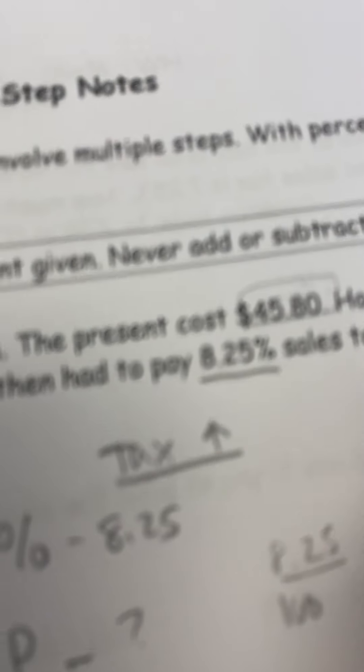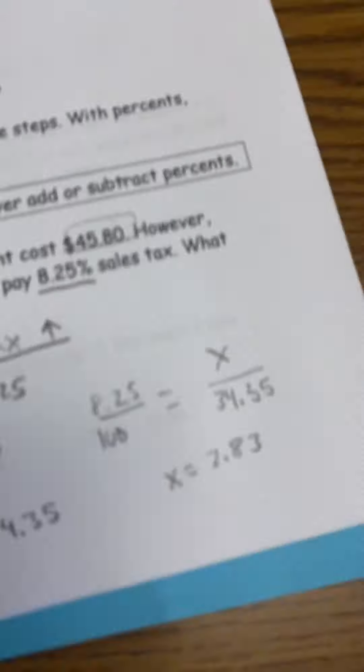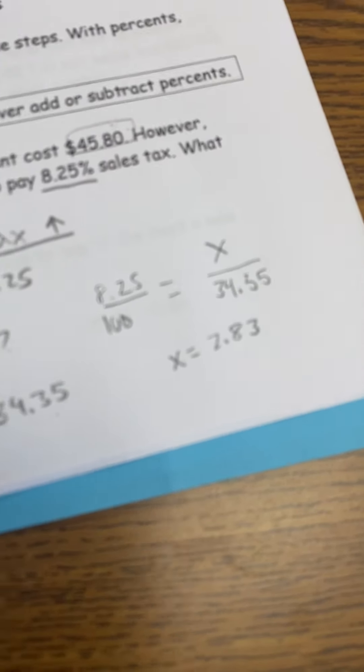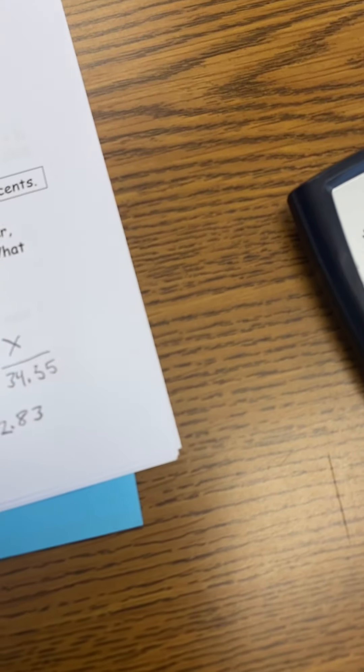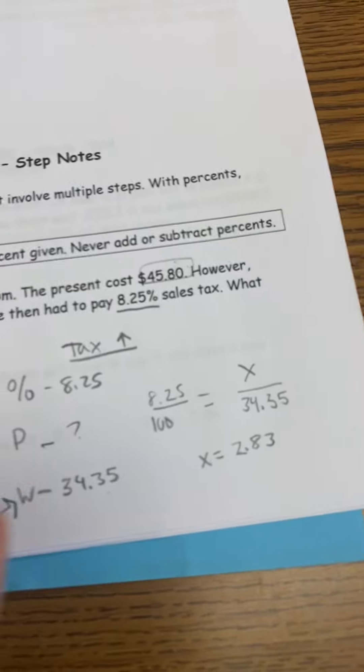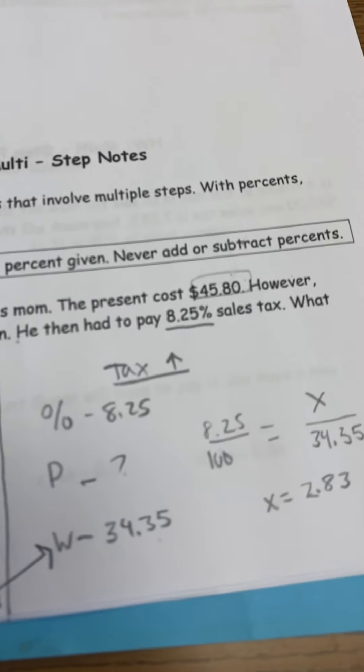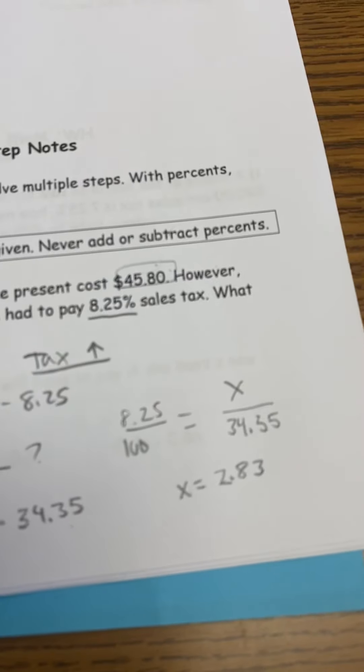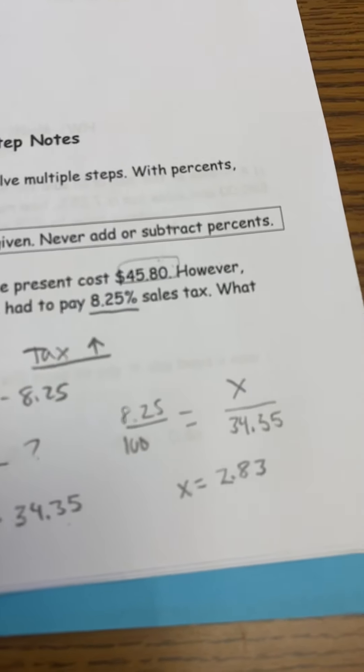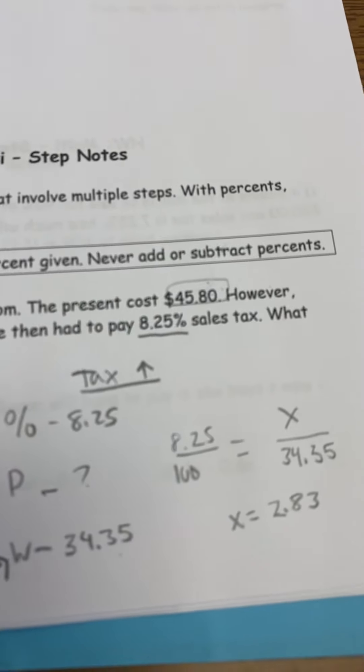All right, either way, did you get for the tax $2.83? Okay, so that's not how much it's going to cost - that would be fantastic - but that is not how much the present's going to cost. They're going to take this and add it to the sale price.